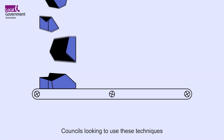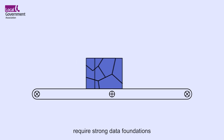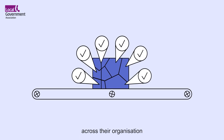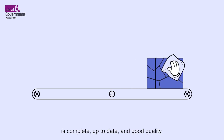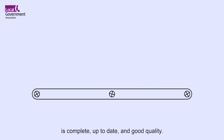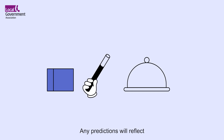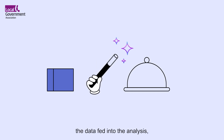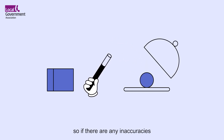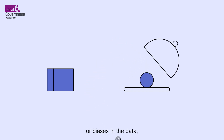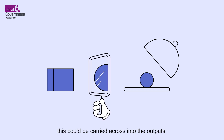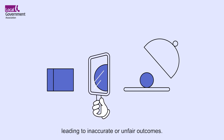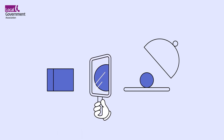Councils looking to use these techniques require strong data foundations across their organisation to ensure the data used for analysis is complete, up-to-date and good quality. Any predictions will reflect the data fed into the analysis, so if there are any inaccuracies or biases in the data, this could be carried across into the outputs, leading to inaccurate or unfair outcomes.